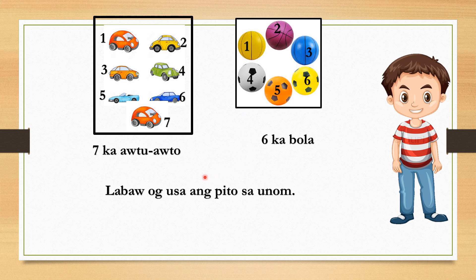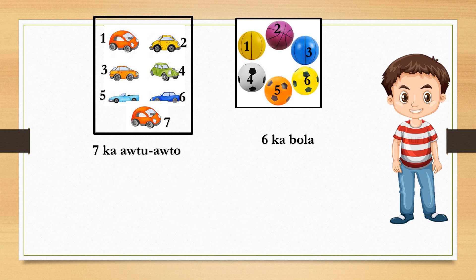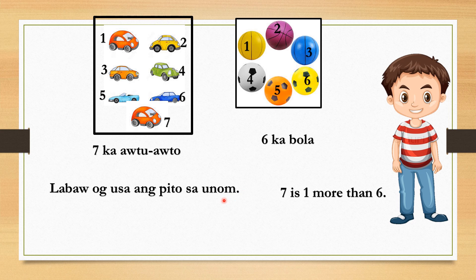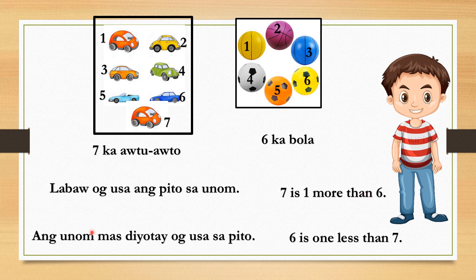Very good. Mas labaw o gusa ang pito sa unom — 7 is one more than 6. Ang unom mas jutay o gusa sa pito — 6 is one less than 7.